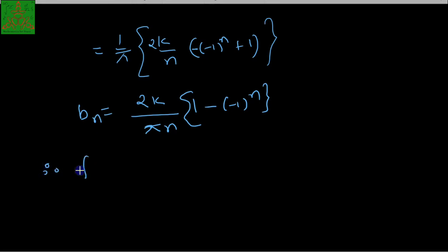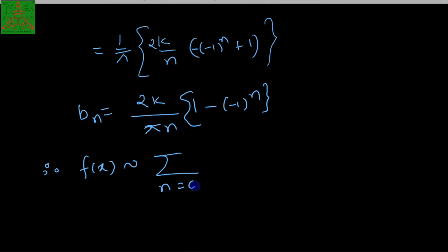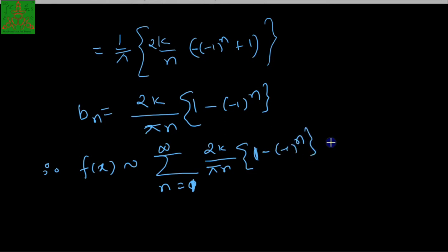So finally, the Fourier series of this function f(x) can be written as: a0 = 0, an = 0, and the series is the summation from n=1 to infinity of [2k/(πn) · (1 − (−1)^n)] · sin(nx).